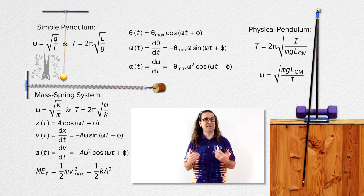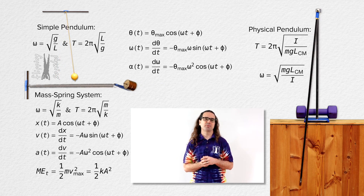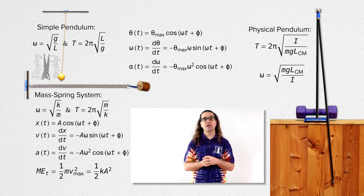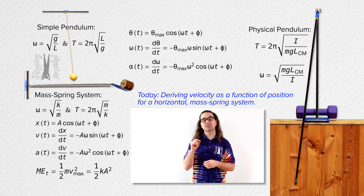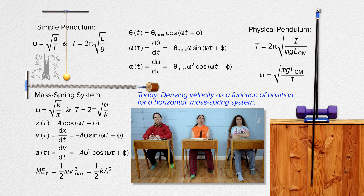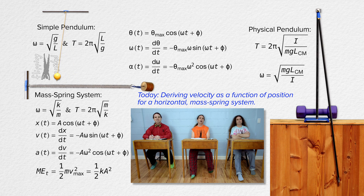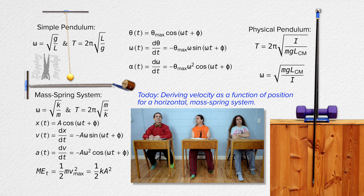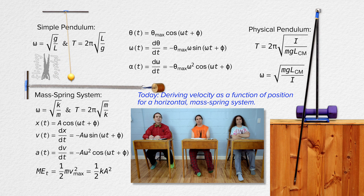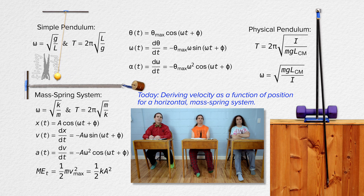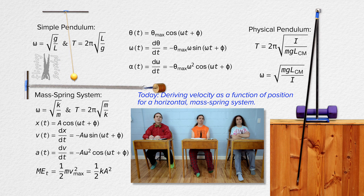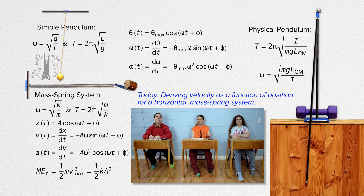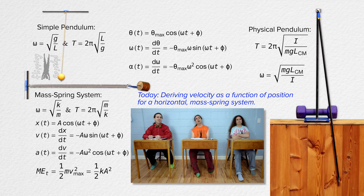Good morning. We've already derived many simple harmonic motion equations. Today we are going to derive the equation for velocity as a function of position for a horizontal mass-spring system. Velocity as a function of position? We usually look at variables as a function of time, but velocity as a function of position is just going to be an equation for velocity in terms of position instead of time.